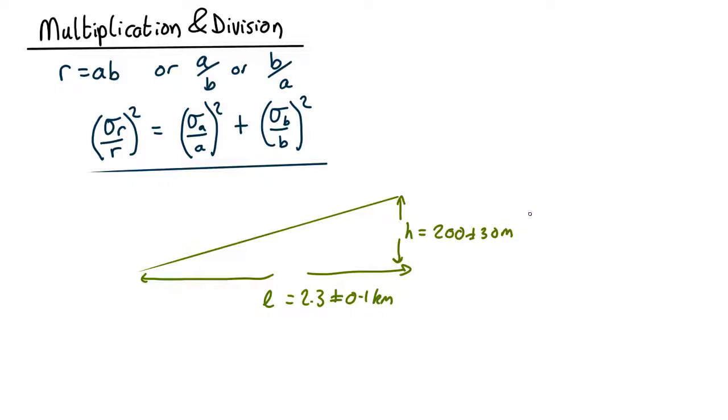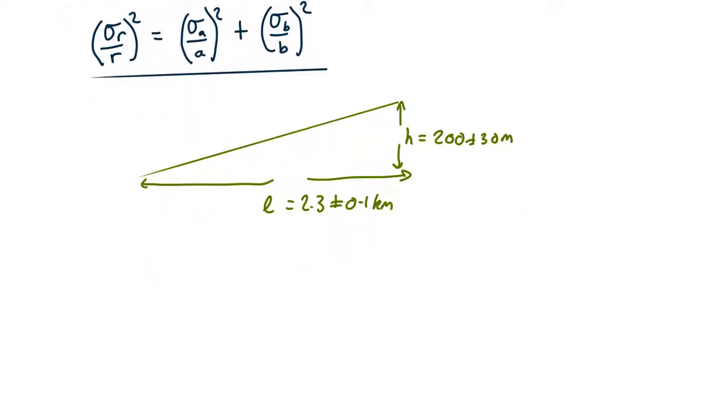Now what is the gradient, and in particular what is the uncertainty in this gradient? Now the definition of the gradient is the height gain over the length. So that's 200 meters over 2300 meters, converting everything to meters, which comes out as 0.087 - no units because it is a ratio.